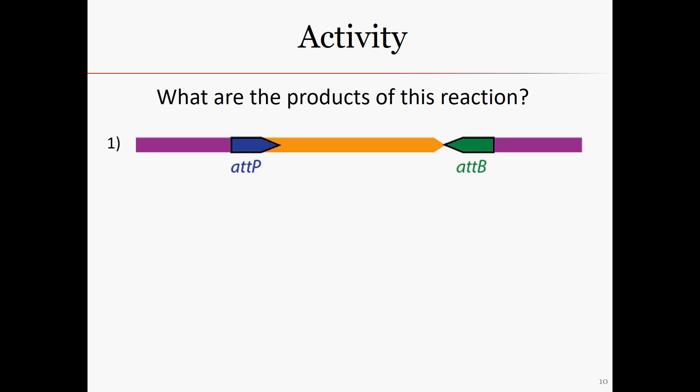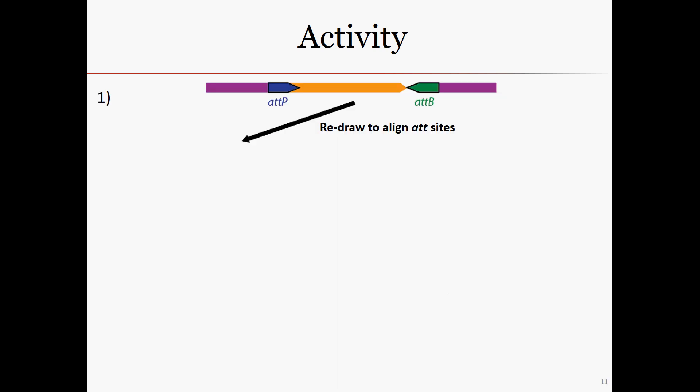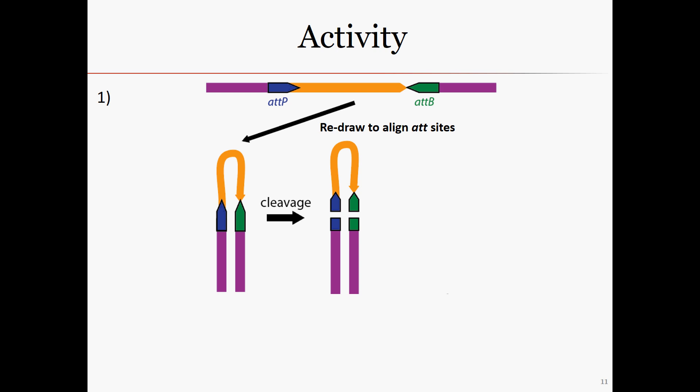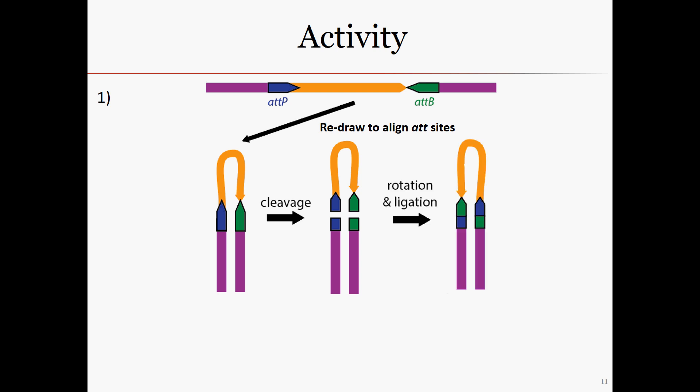Let's go through an example together. In this case, the att-B and att-P sites are facing each other on either side of an orange gene. Remember that the att-B and att-P sites are always partners. To make it easier to see the products of the reaction and to mimic how the reaction works in the test tube, let's first redraw the DNA so that the att-B and att-P sites are aligned. Remember, these sites are directional, so they need to be lined up in parallel, with the arrowheads facing the same direction. At this point, the enzyme will cleave each site at the center, then switch which strand is ligated to which backbone. Again, these are directional, so the right-hand sides, or arrowheads, will always swap with each other.